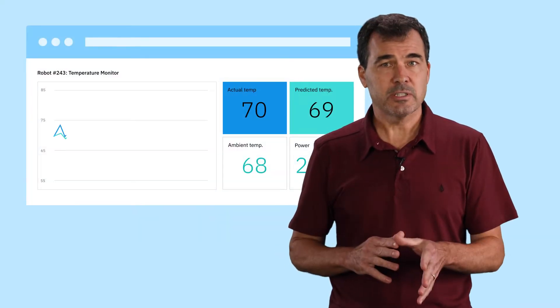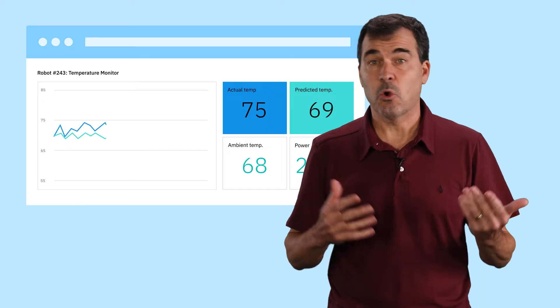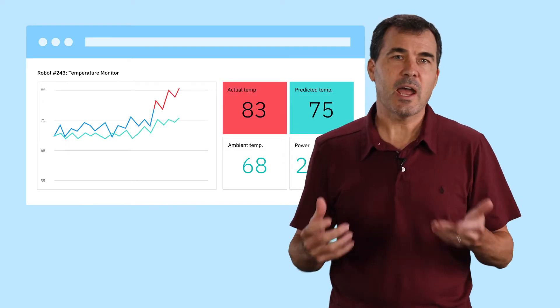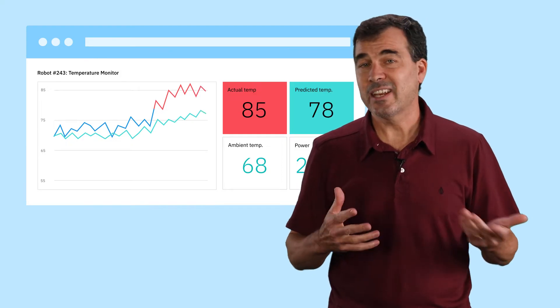Unlike our first example, where we predicted maintenance needed or not, with regression, we might use a dashboard to keep an eye on the situation, instead of getting a predictive yes or no. Okay, now we understand the basics of supervised machine learning.